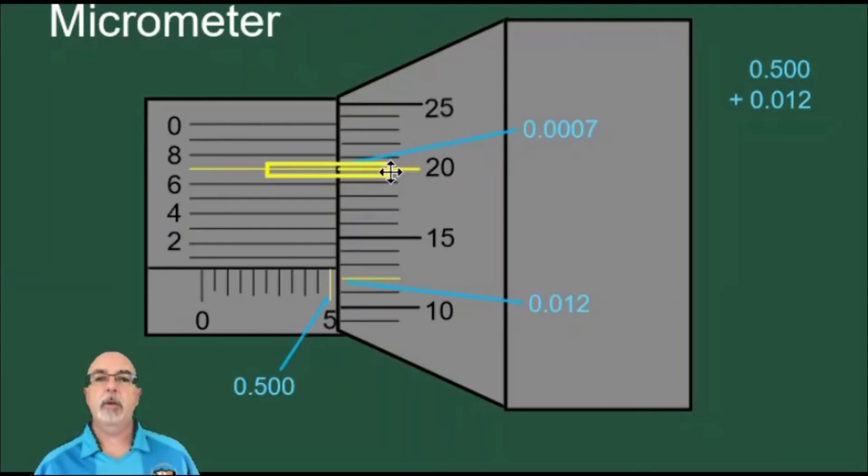We're not using the 20 for our reading though. It's the seven that we want. Once we realize this is the line that lines up perfectly, we write 0.0007 as the last decimal we need for our reading.